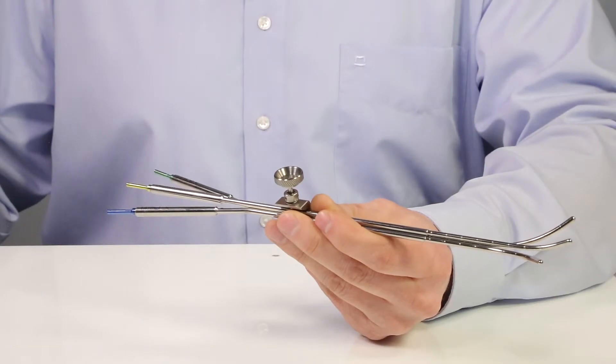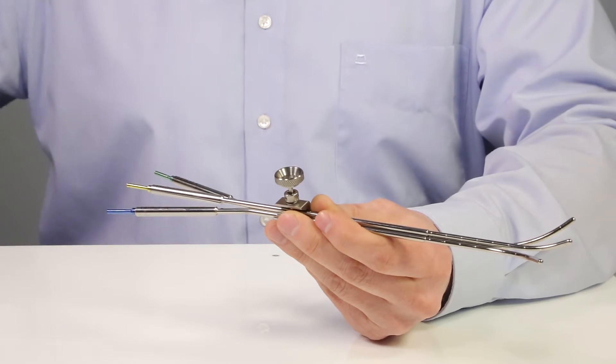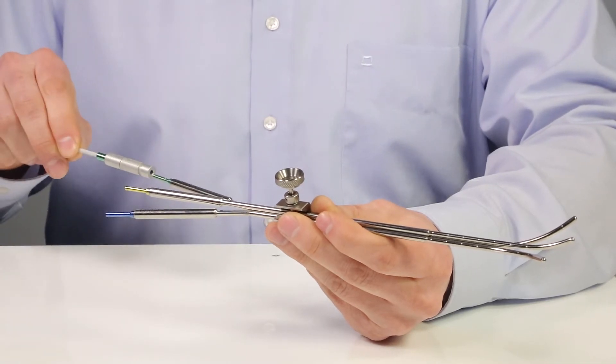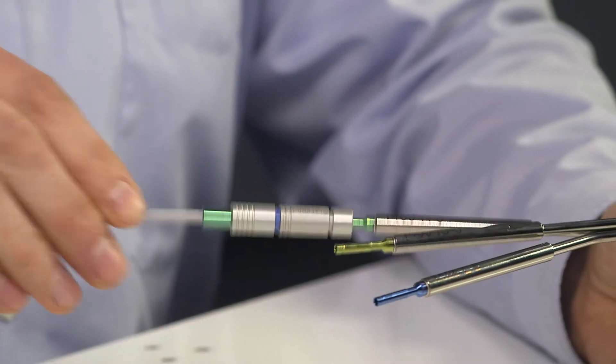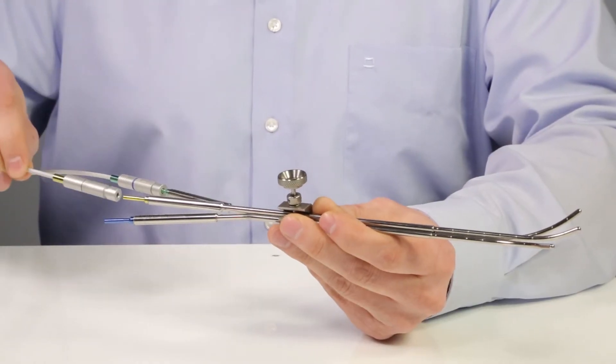In order to start the treatment, transfer tubes are needed. Eckert & Ziegler provides transfer tubes with color codes. They are easily pushed into place.